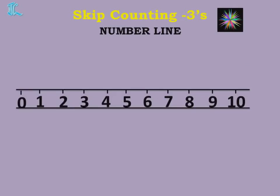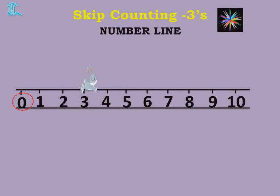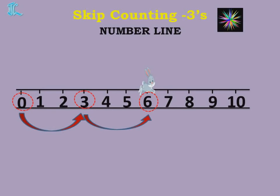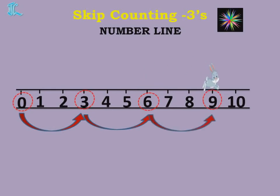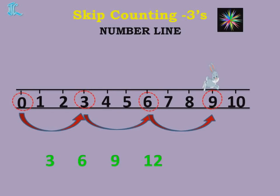Now, Skip Counting by Threes on a number line. You can see the number line here from 0 to 10. Can you see a bunny on top of a number? The bunny is on number 0. We leave 1 and 2 and jump to 3, then leave 4 and 5 and jump to 6, then leave 7 and 8 and jump to 9. If the number line continues, we leave 10 and 11 and jump to 12. So the numbers the bunny jumped on are 3, 6, 9 — and next would be 12.